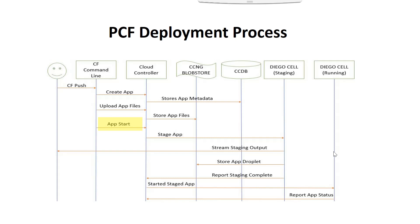So at a high level, just remember there are three steps while deploying the process. First, it will upload the metadata into the database. It will upload the application files into the blob store. Then it will create the droplet and start the droplet, and eventually the application will be started.